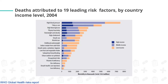This graph shows deaths attributed to 19 leading risk factors by country income level in 2004. As you can see, the leading cause of death is high blood pressure, which is true for all income classes — high, middle, and low — followed by tobacco use.